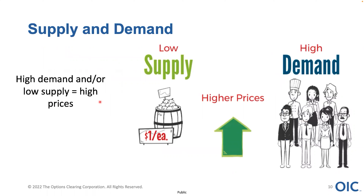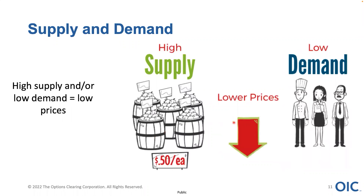Just like any product, if you have a low supply and high demand, you're naturally going to get higher prices. This is something we've all witnessed this year with inflation — we've seen gas prices go up, food prices go up, the price of bacon, eggs. Food prices have just gone through the roof. So naturally, as you have low supply and high demand, that's going to equate to higher prices, no different than the options market. On the flip side, high supply and low demand is going to equate to lower prices.